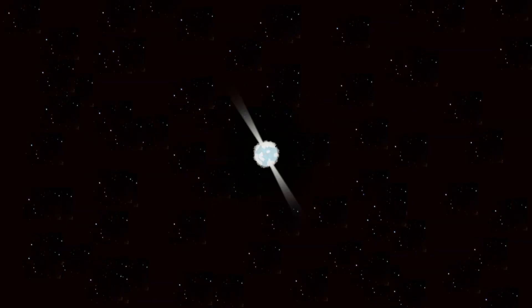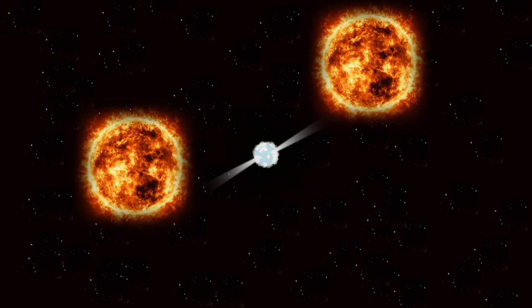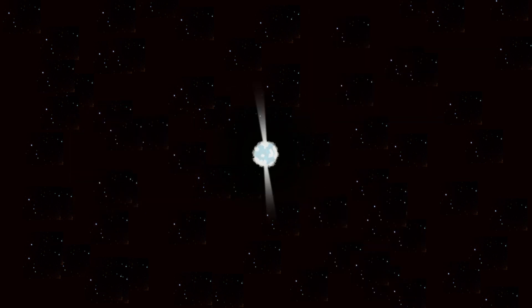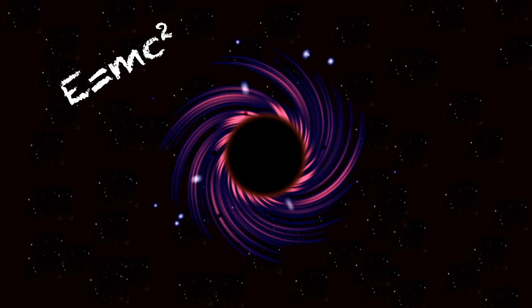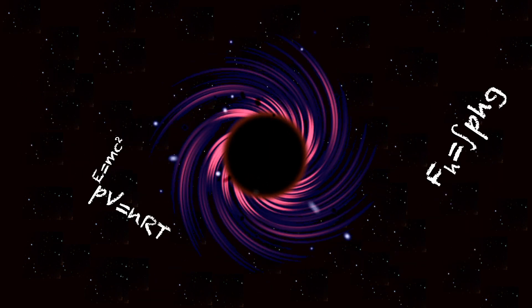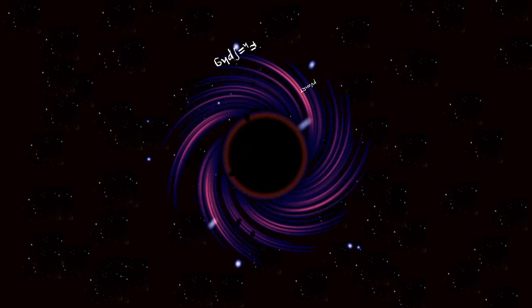If the neutron star weighs more than three Suns, it will collapse further and become a black hole. These are so dense that nothing can escape their gravitational pull, not even light itself. Black holes are fascinating objects as they are so dense that our current understanding of physics breaks down.